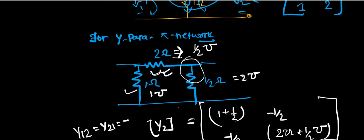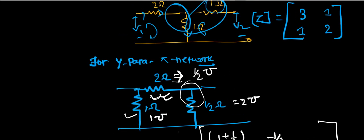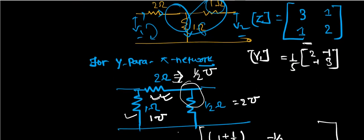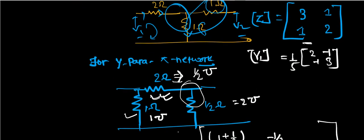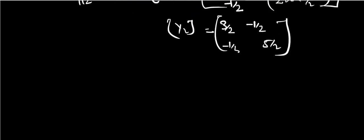Y1 matrix we also know from this equation. The Z parameter we know. Y1 matrix is also known because it's the inverse. 2, minus 1, minus 1, and 3. That is 1 by 5, so 2 by 5, minus 1 by 5, minus 1 by 5, and 3 by 5 is the Y1.